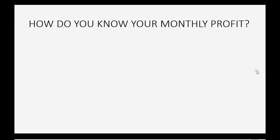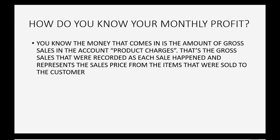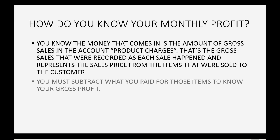How do you know your monthly profit from your Amazon online store? The money that comes in is the amount of gross sales that goes into the account that Amazon calls product charges — that's the gross sales recorded as each sale happened, representing the sales price from items sold to your customers.